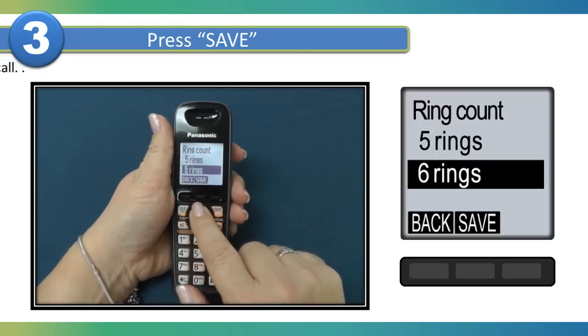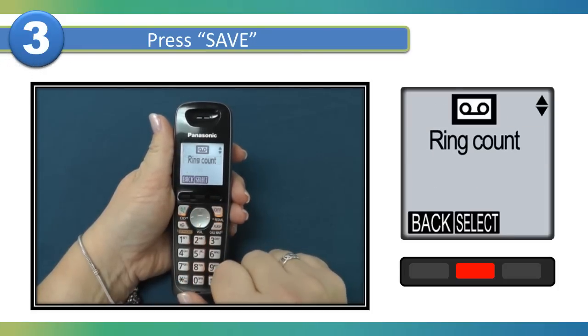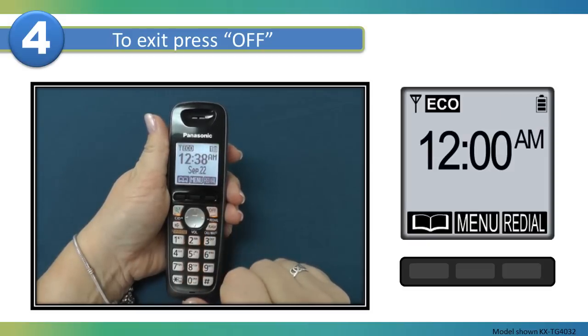Select the number of rings, and then press save. To exit programming, press off. The ring count is now changed.